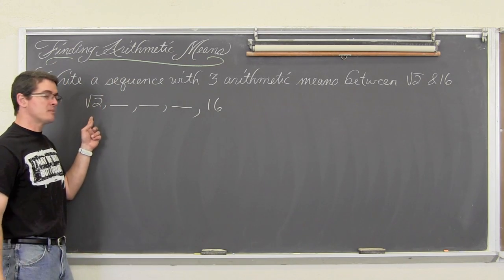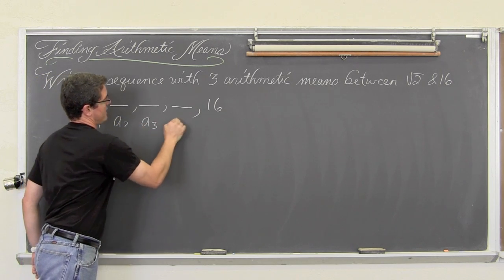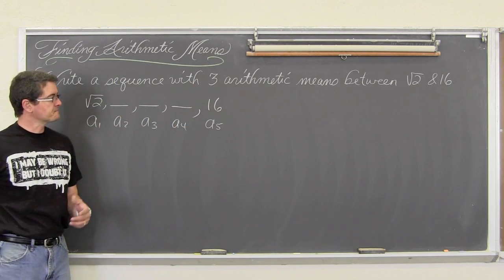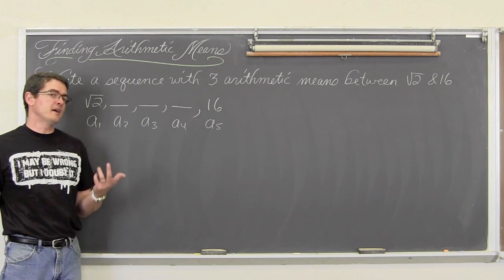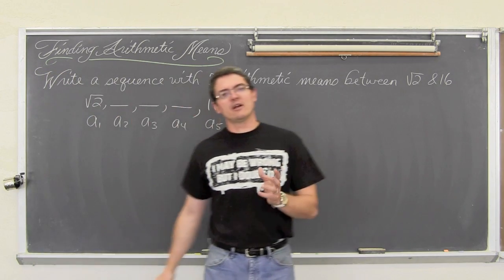That means that this is going to be a sub 1, a sub 2, a sub 3, a sub 4, and now we have a sub 5. And we need to find the common difference. That means we are going to use that general term of an arithmetic term, which is a sub n is a sub 1 plus n minus 1 times d.